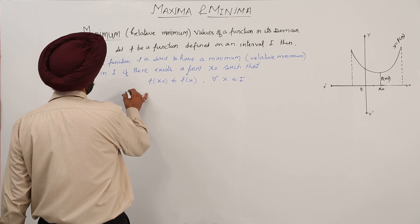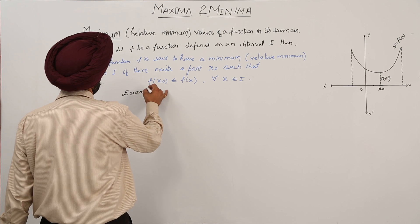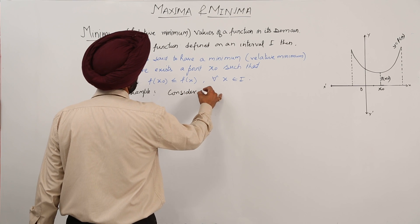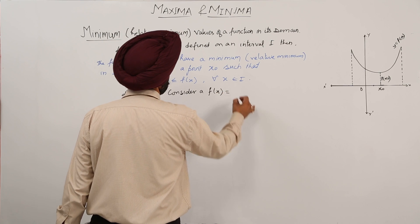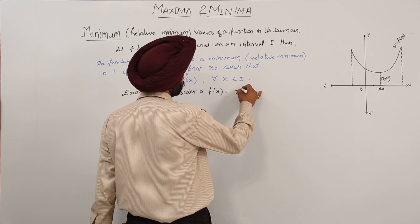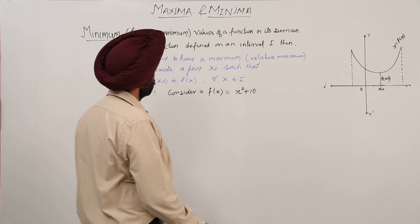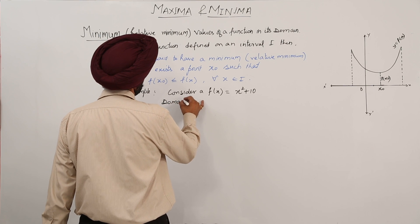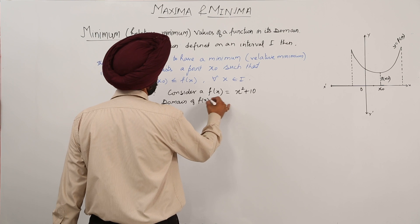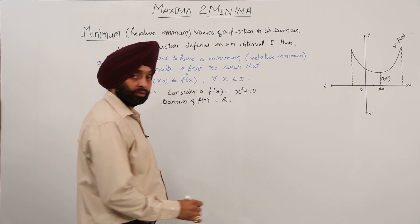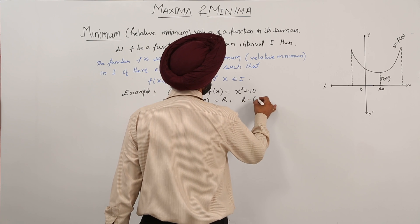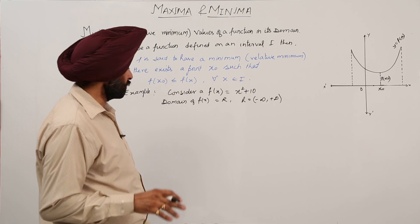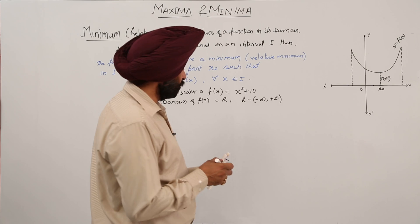Now let's look at an example. Consider the function f(x) = x² + 10. The domain of this function is the set of all real numbers, which we can write as negative infinity to positive infinity.